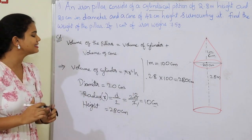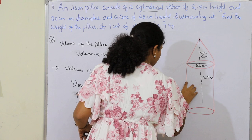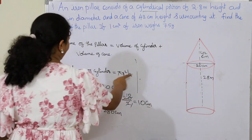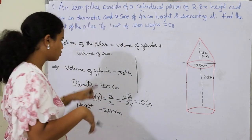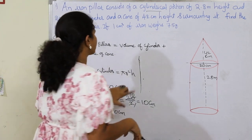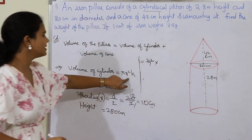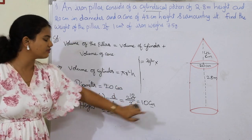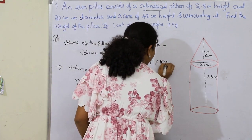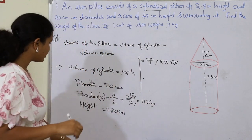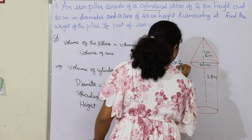Now I have all the values. Substituting into the volume of cylinder formula: π r² h equals 22/7 into 10 into 10 into 280.